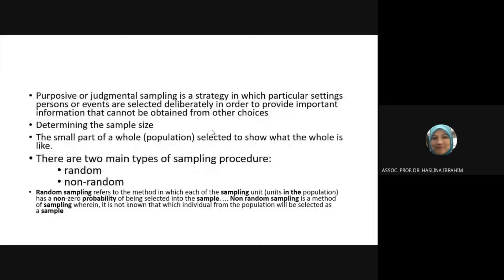The strategy is to select particular settings, purposes, or events deliberately in order to provide important information that cannot be obtained from other choices. You have to take those people — whether they are committee members or key informants — as your respondents, because if you ask somebody else, you may not be able to get the firsthand data.